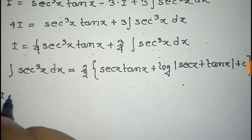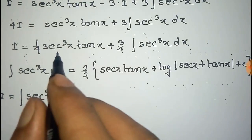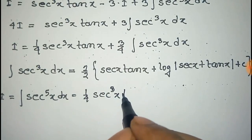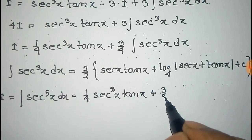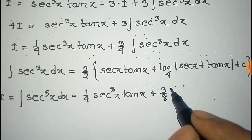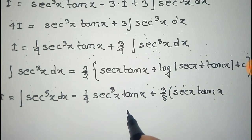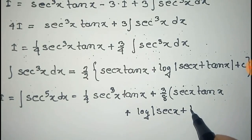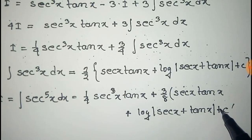So, putting this integration of sec cube x into our expression, I equals one fourth sec cube x tan x, and substituting the integration of sec cube x, we get 3 by 8 times sec x tan x plus log of the modulus of sec x plus tan x, plus constant c. Thus, we have integrated sec to the power 5x dx.